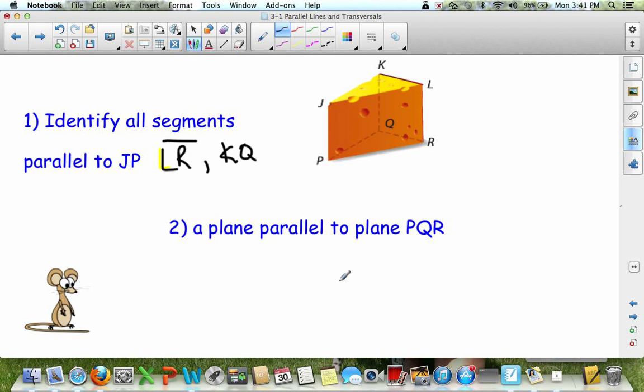And a parallel plane, or a plane parallel to plane PQR. PQR is this plane down here. So a plane that will never intersect it is going to be plane J-K-L. Alright, so there's identifying planes and parallel lines.